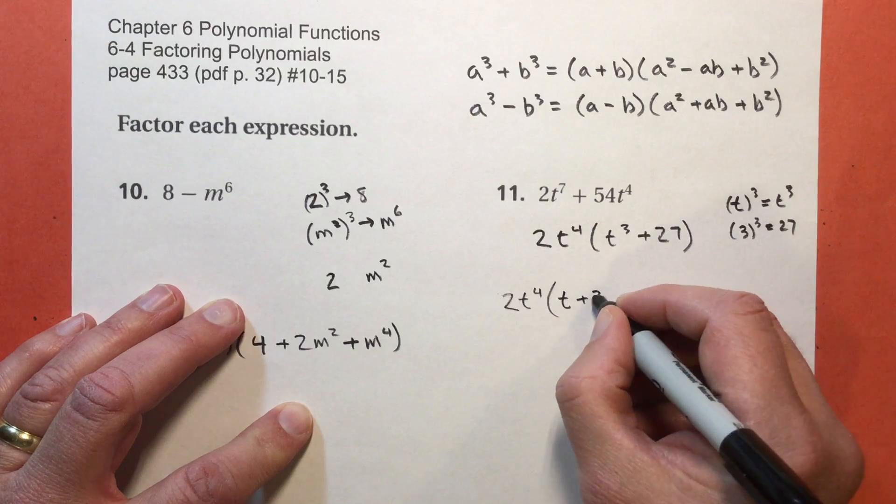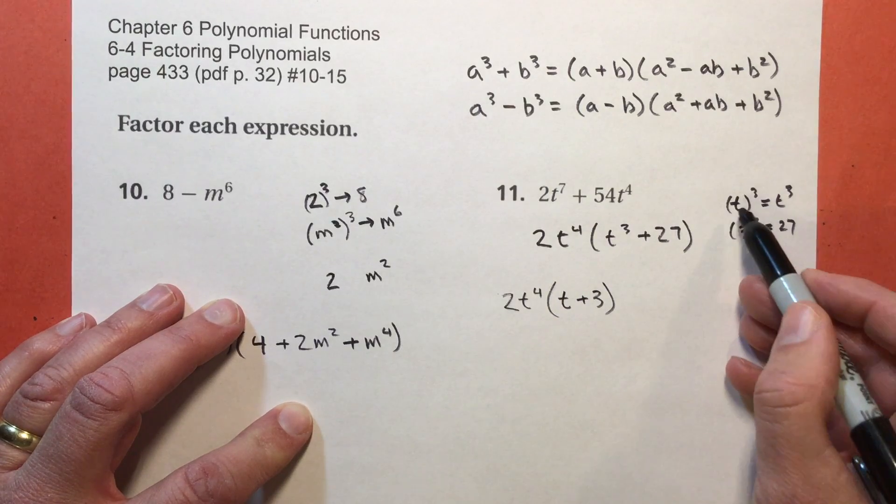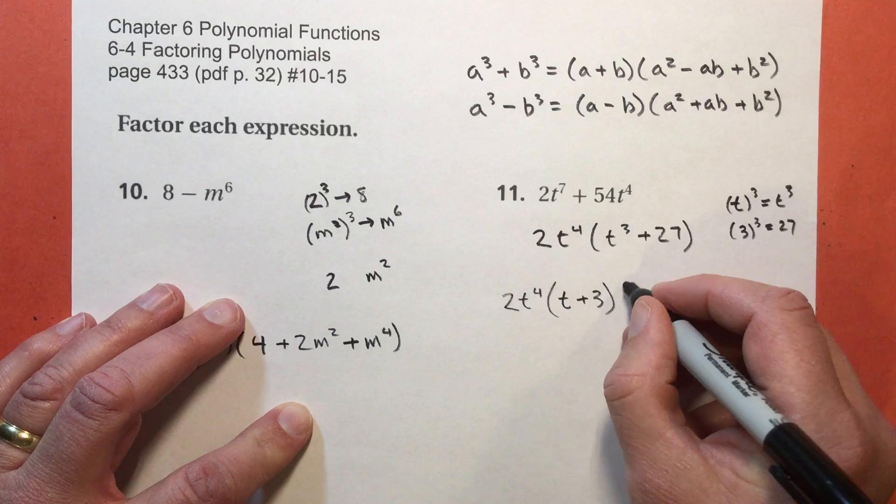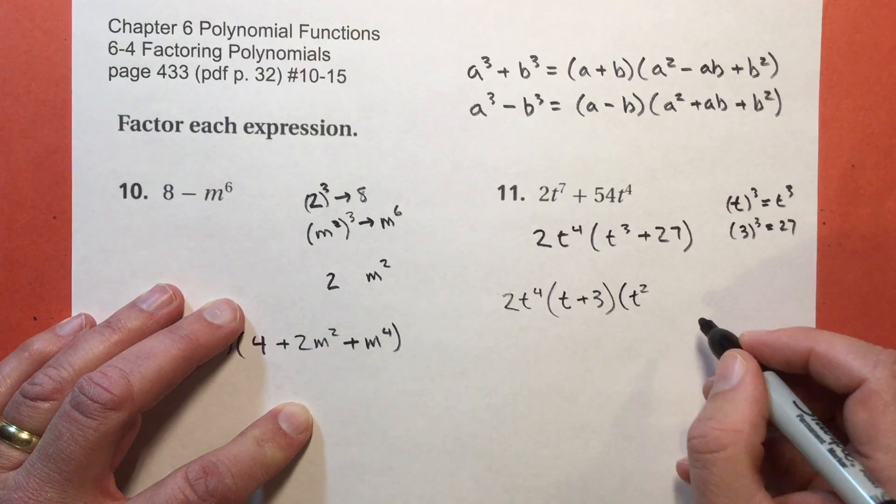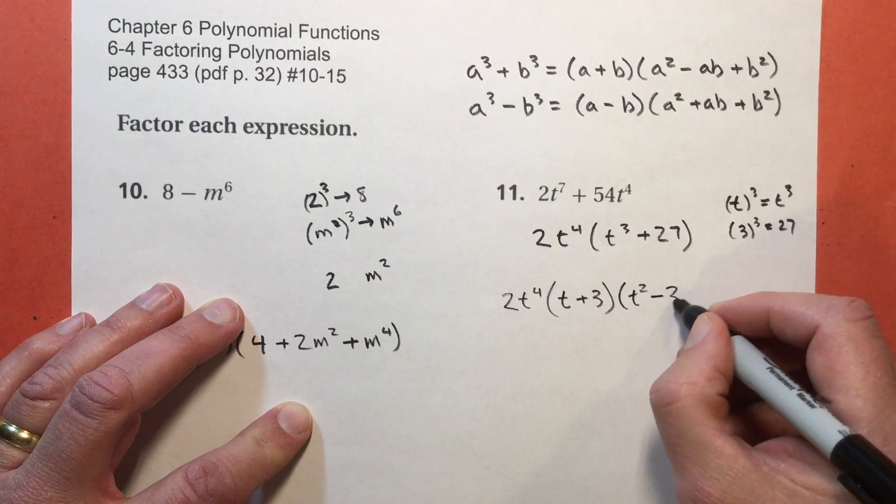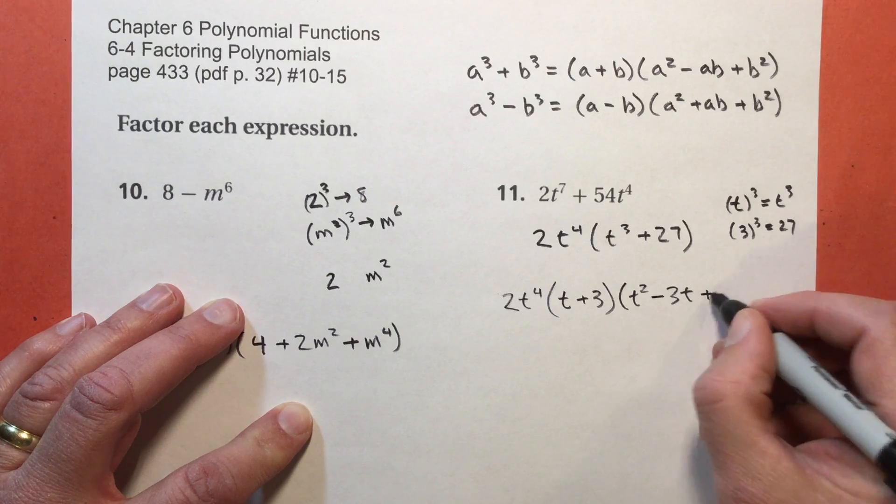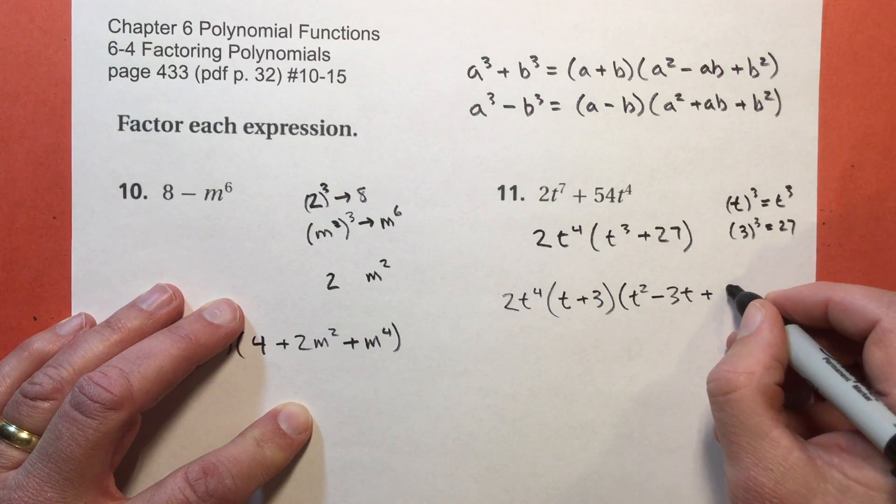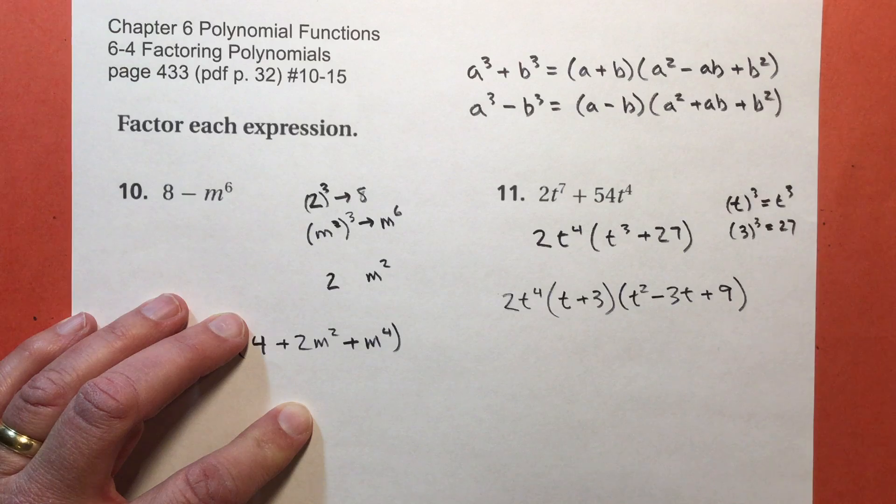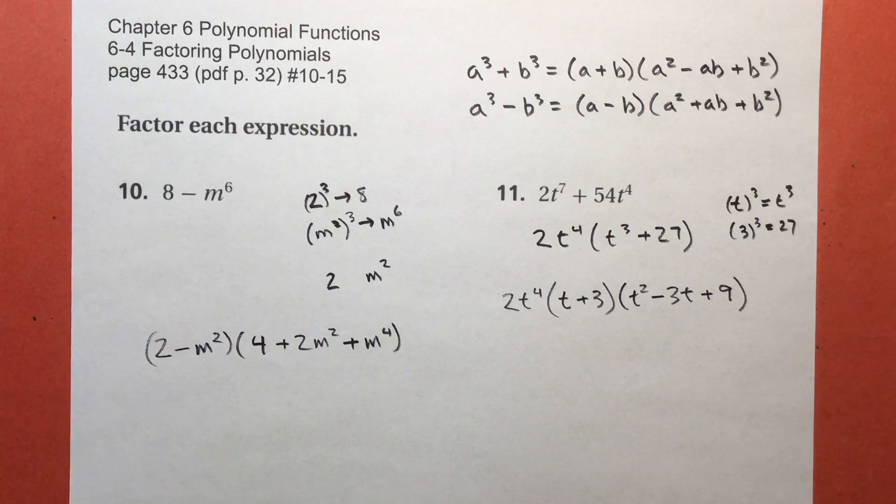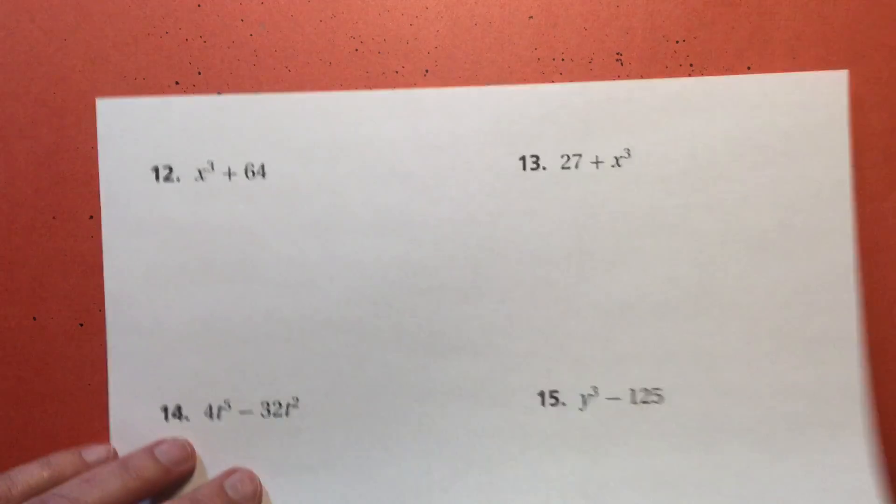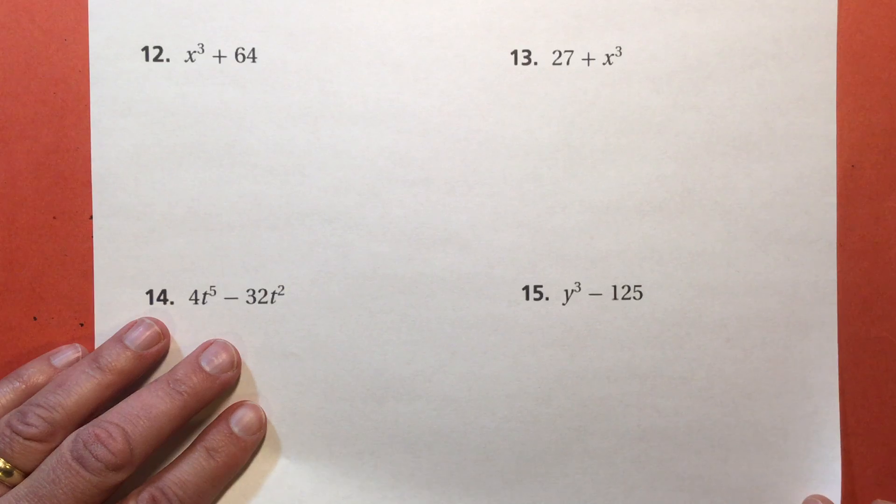t plus 3. That t plus that 3. Times t squared. Subtract 3 times t. Plus 3 to the second power, which is 9. And that's all you have to do for that one. Got my other paper here.